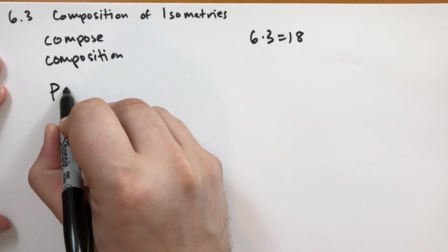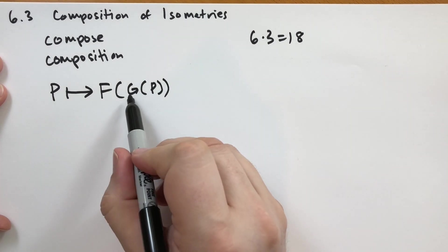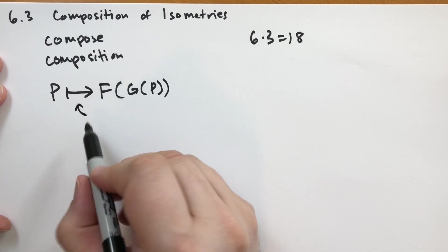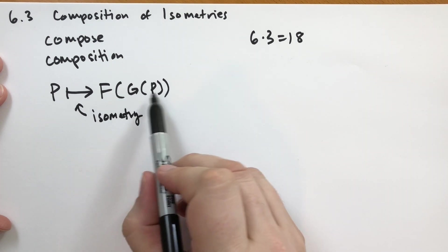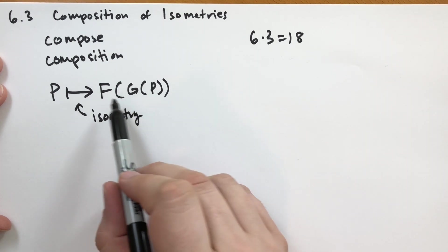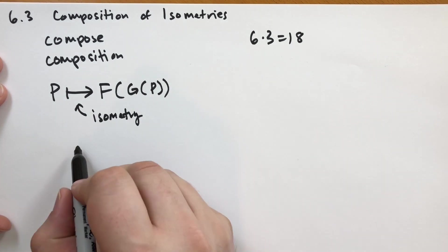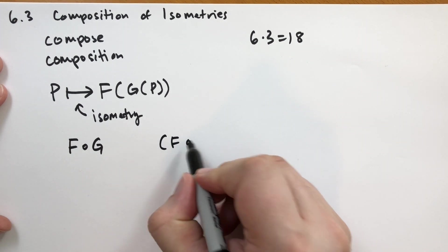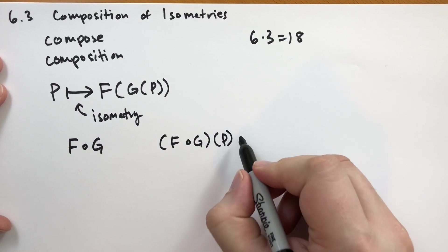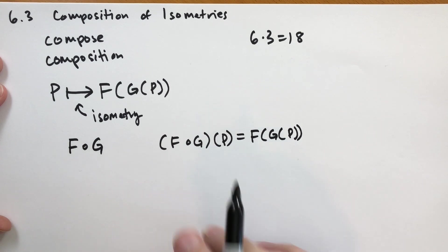Let's talk about the general case. When we have the situation where you take a point P and you apply it through two isometries, one after the other, first you apply it to G and then to F. This itself is also an isometry. A shorthand for this isometry is F circle G. So we apply the one on the right first and then we apply the one on the left second. When you actually apply that to a point, it looks like this: F of G of P.